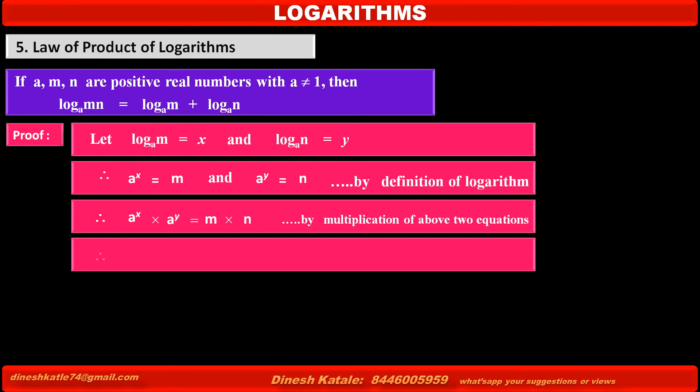Therefore, by using the indices rule of multiplication we get A raised to X plus Y, by adding powers of common base A, which is equal to M times N.